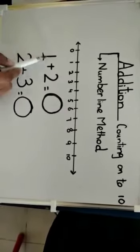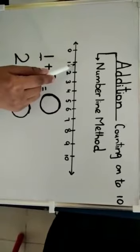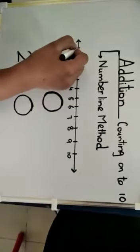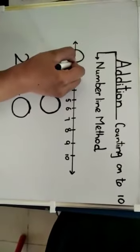So I will move from number zero up to number one. Like this. I have to draw an arrow like this. I will jump on number one.